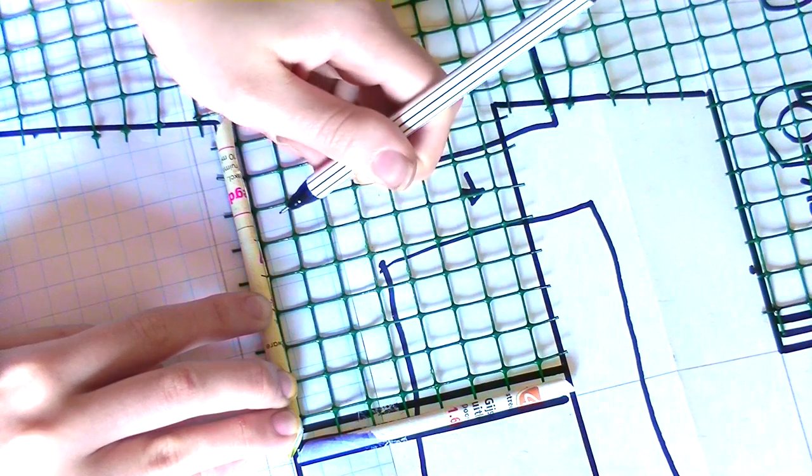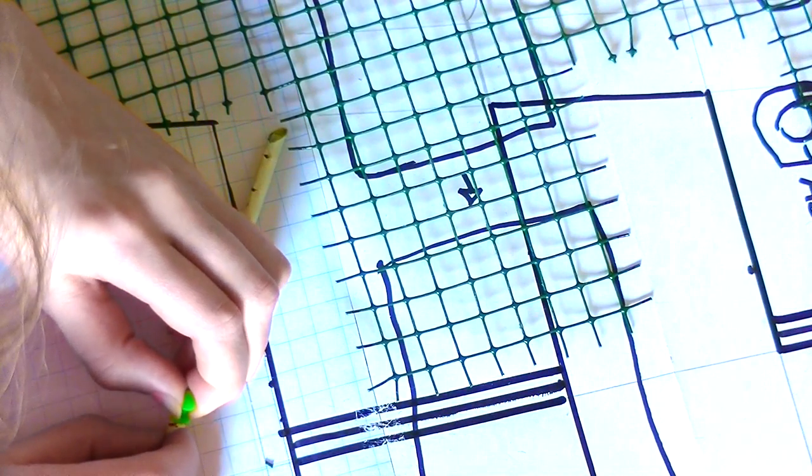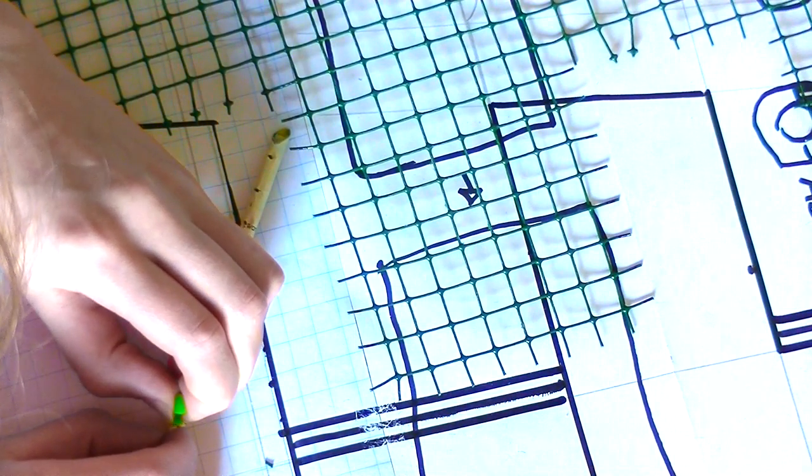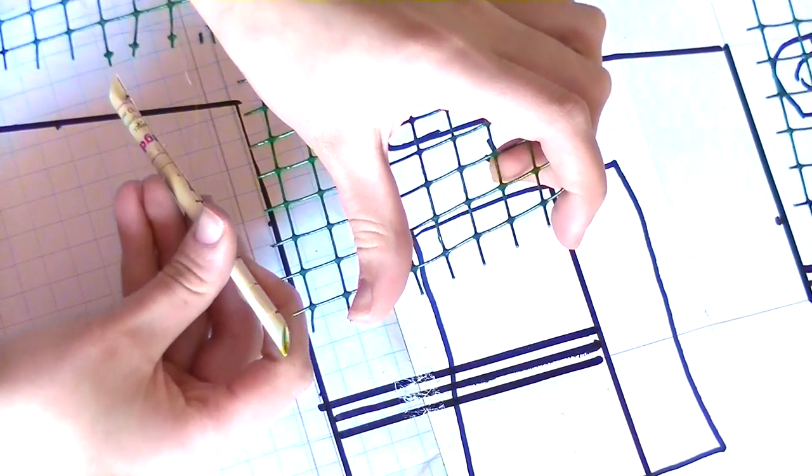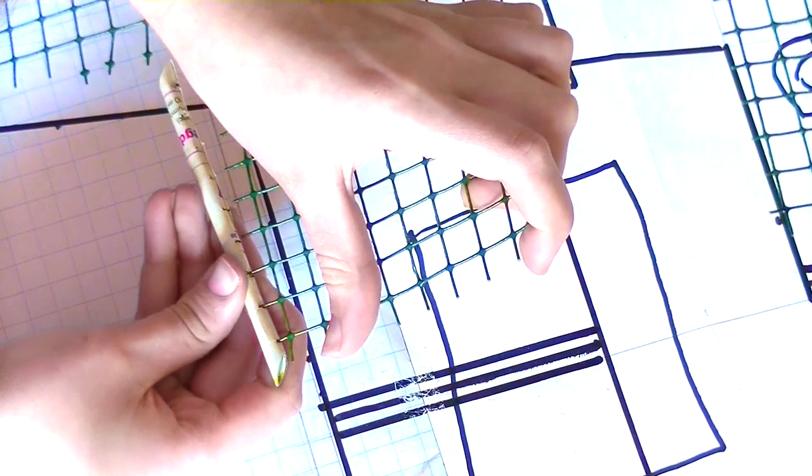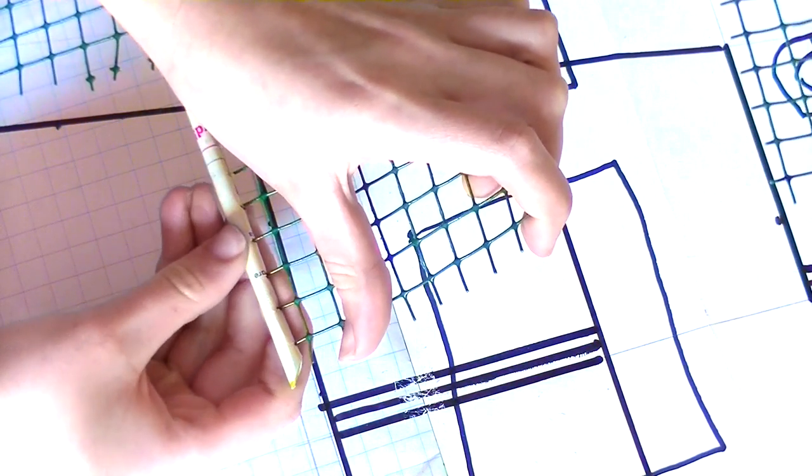To attach your paper you can first mark where you want your holes to be and then make holes with the pushpin. Now you can push the wire through the holes and you can repeat this several times.